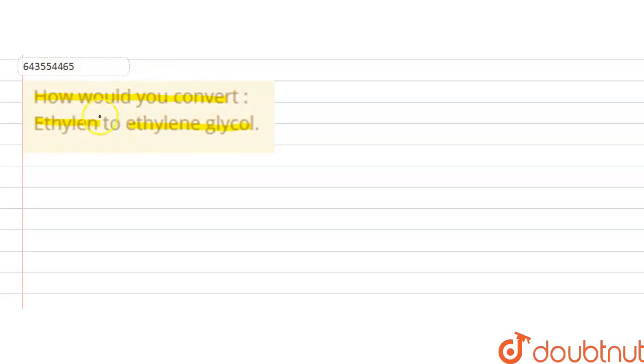we have to convert ethylene to ethylene glycol. Ethylene is CH2 double bond CH2 and ethylene glycol is CH2OH, CH2OH or it is known as ethane-1,2-diol.